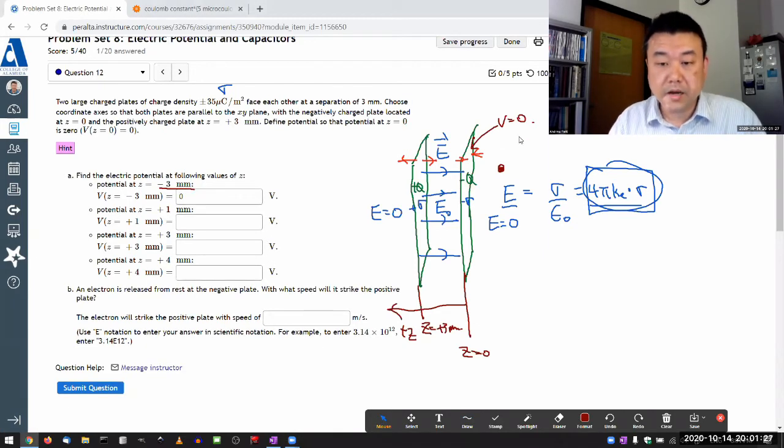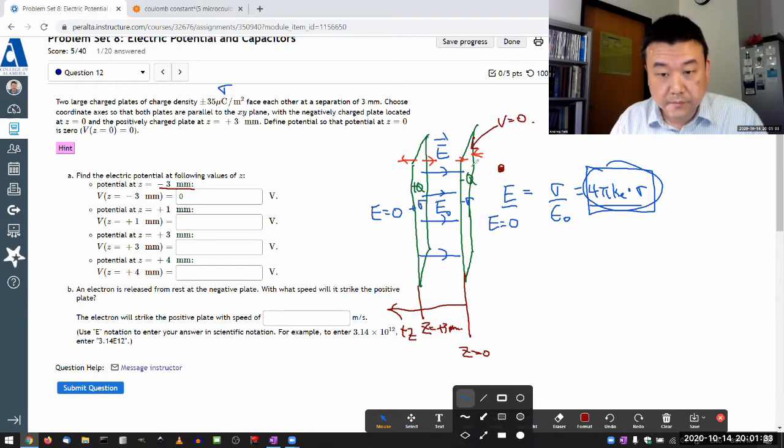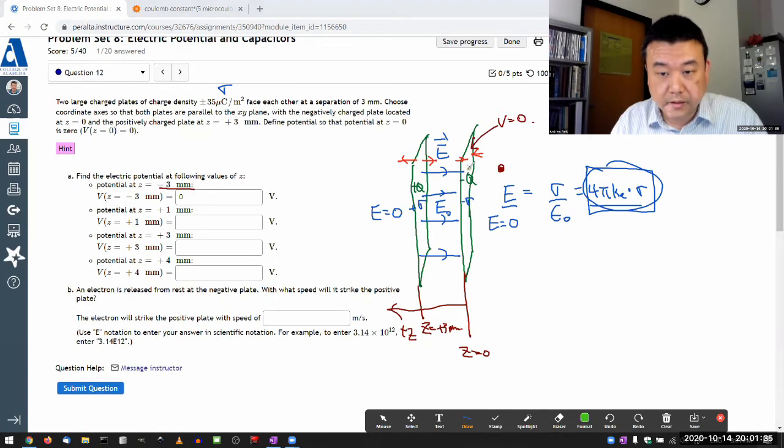Because as I look at this picture, I realize I can just define a path here from my zero volted plate to that point. And along that entire path, my electric field is zero. So I can make this journey without any change in potential. That's why it's zero.